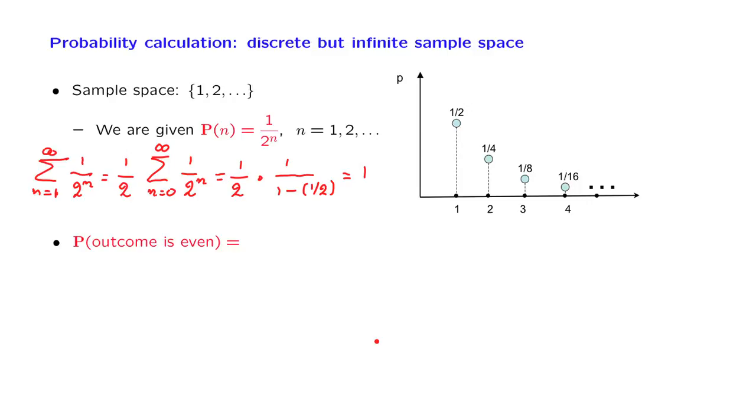For example, the probability that the outcome is even. We proceed as follows. The probability that the outcome is even, this is the probability of an infinite set that consists of all the even integers.